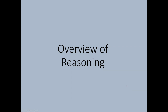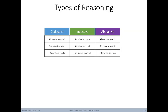Now let's shift gears to an overview of reasoning. There are three main types: deductive, inductive, and abductive. Deductive example: 'All men are mortal. Socrates is a man. Therefore, Socrates is mortal.' Inductive example: 'Socrates is a man. Socrates is mortal. Therefore, all men are mortal.' Abductive example: 'All men are mortal. Socrates is mortal. Therefore, Socrates is a man.'